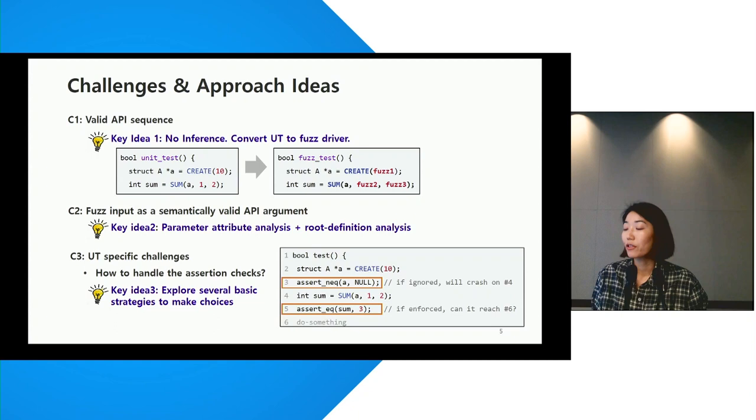Today I will only discuss how to handle the assertion checks in unit tests for fuzzing. In the example, there is a null check on line three, and the same object is provided as an argument on line four. Once these are converted into fuzz driver, and if we omit the assertion check on line three, it could lead to spurious crashes on line four.